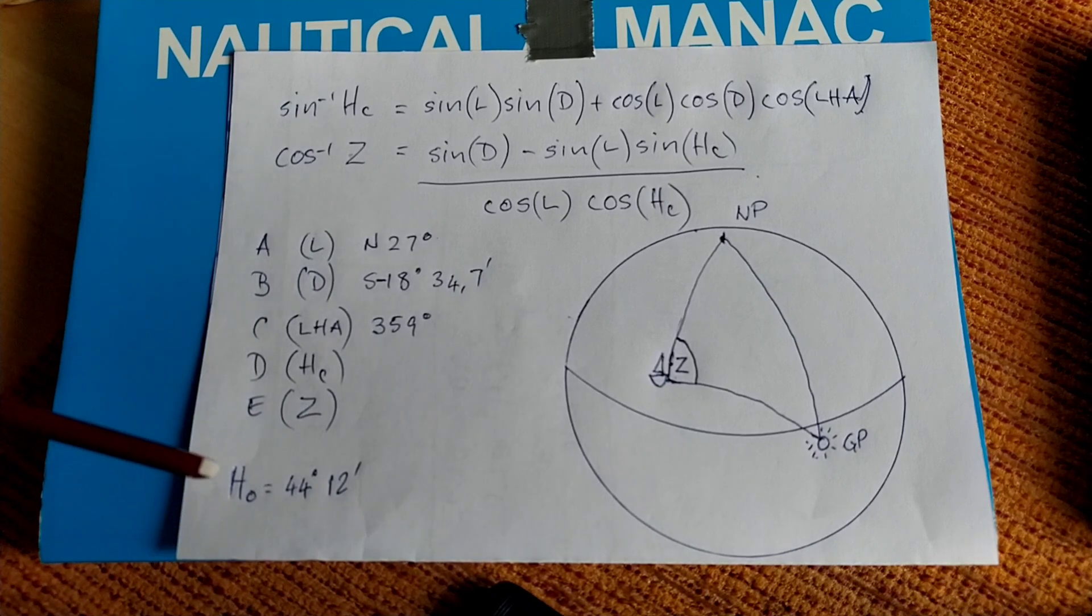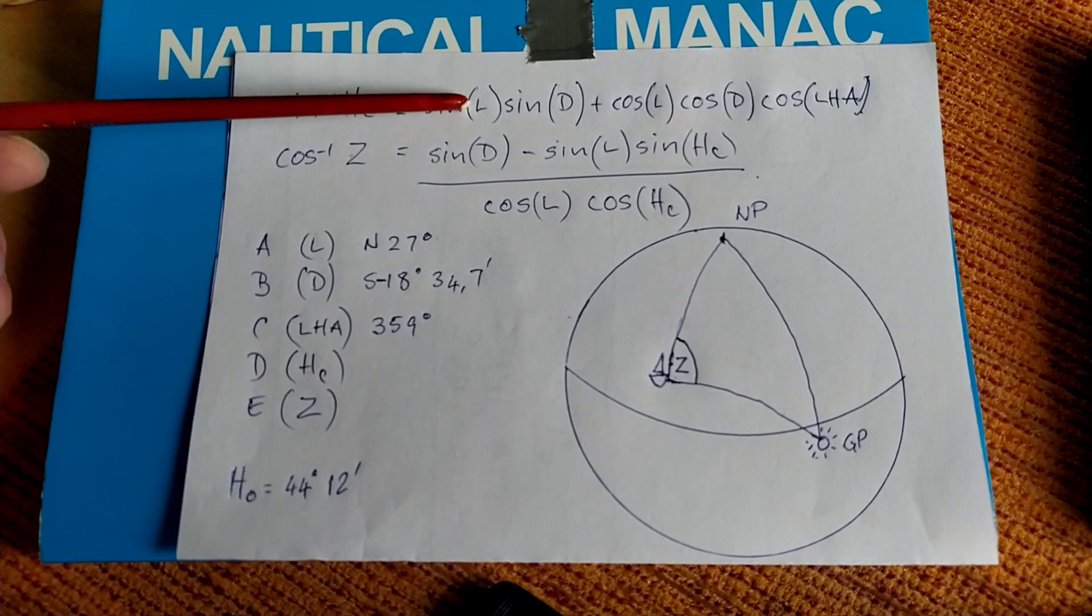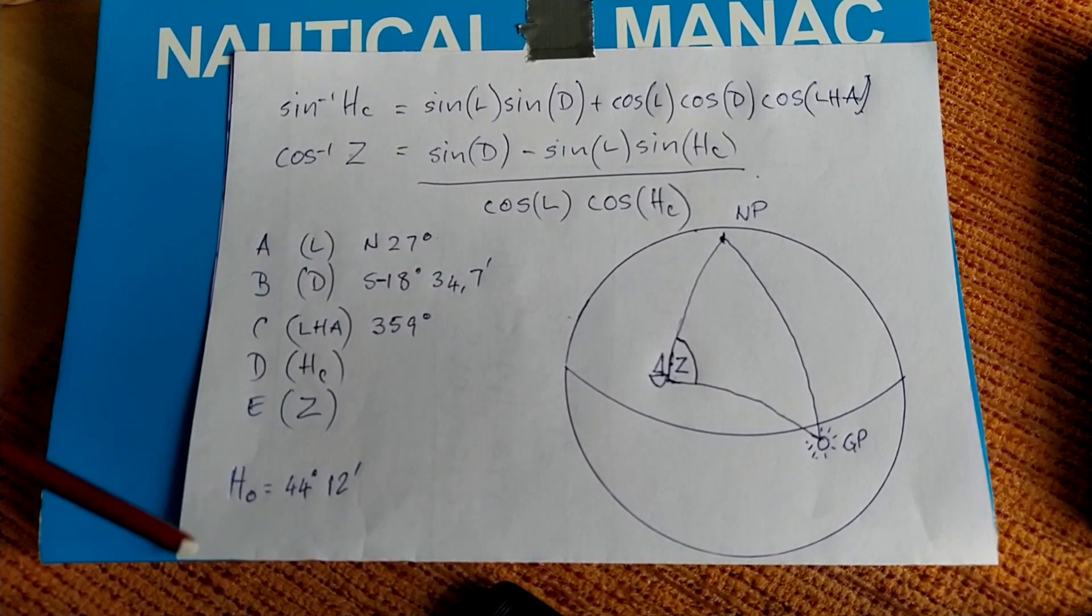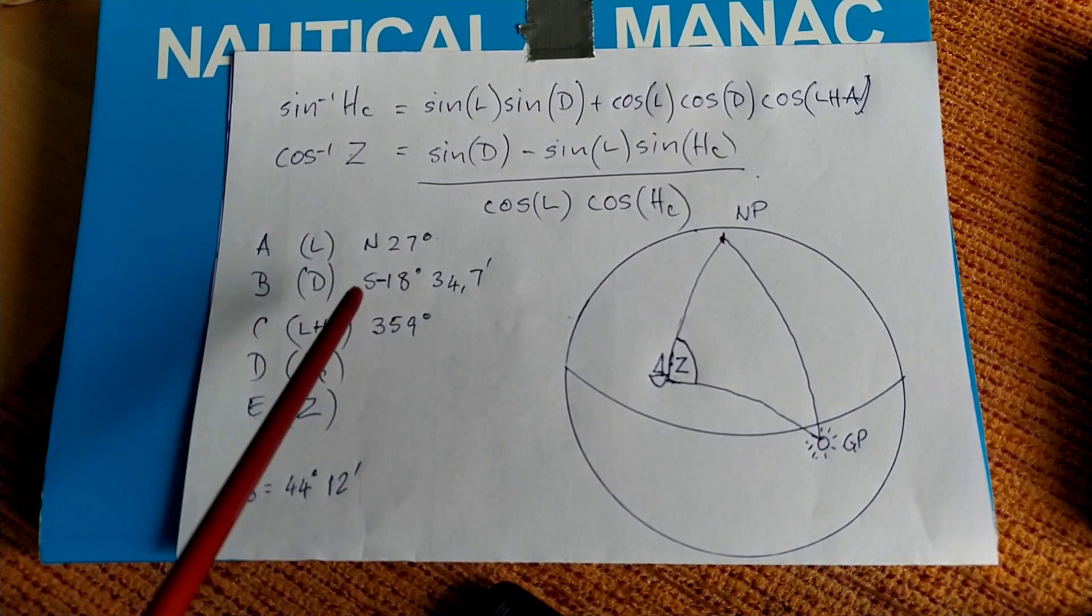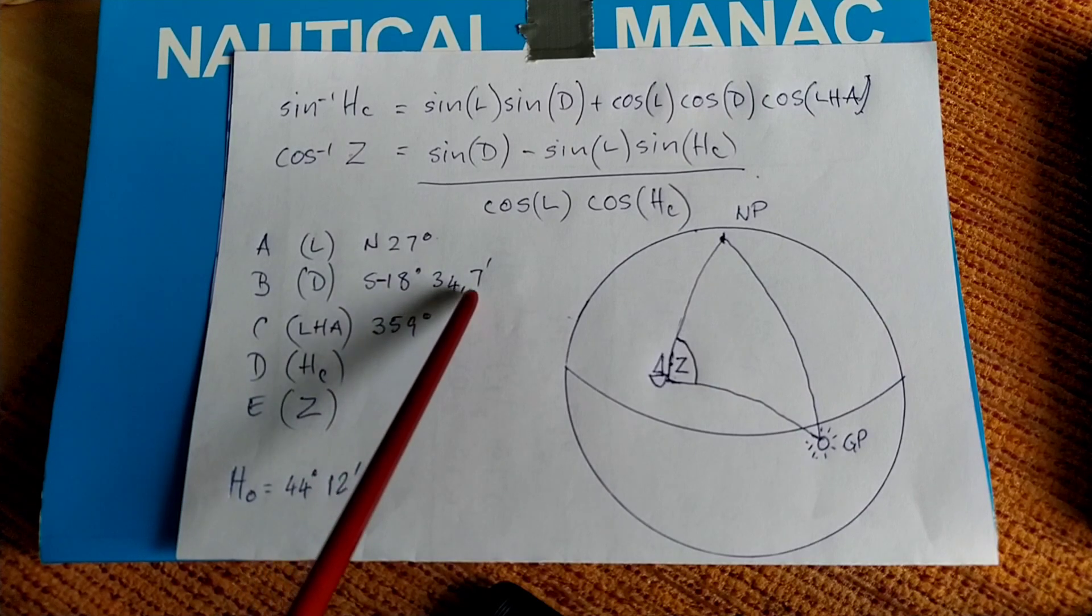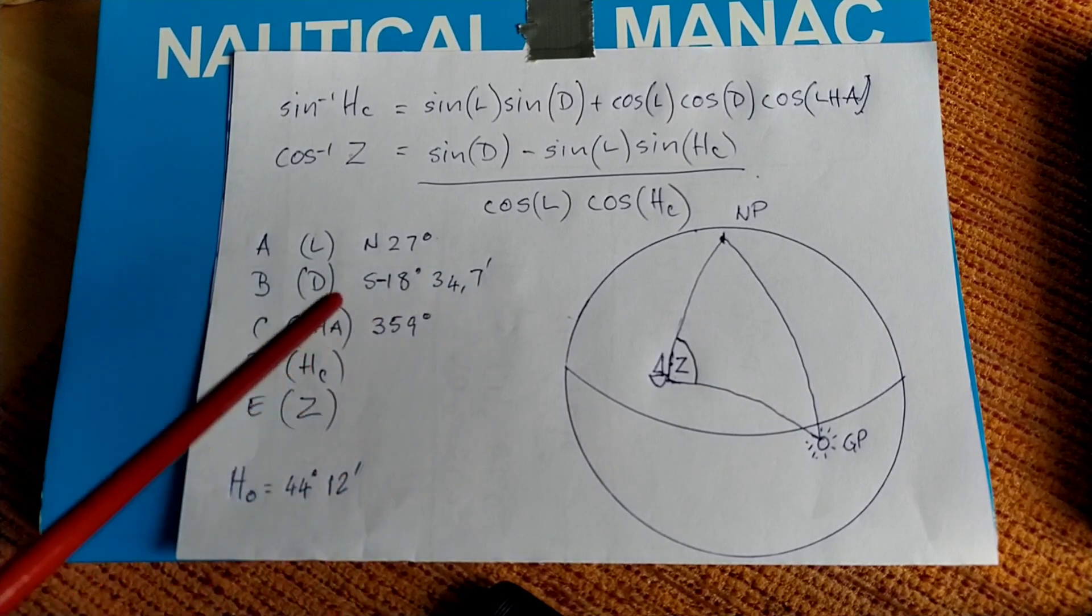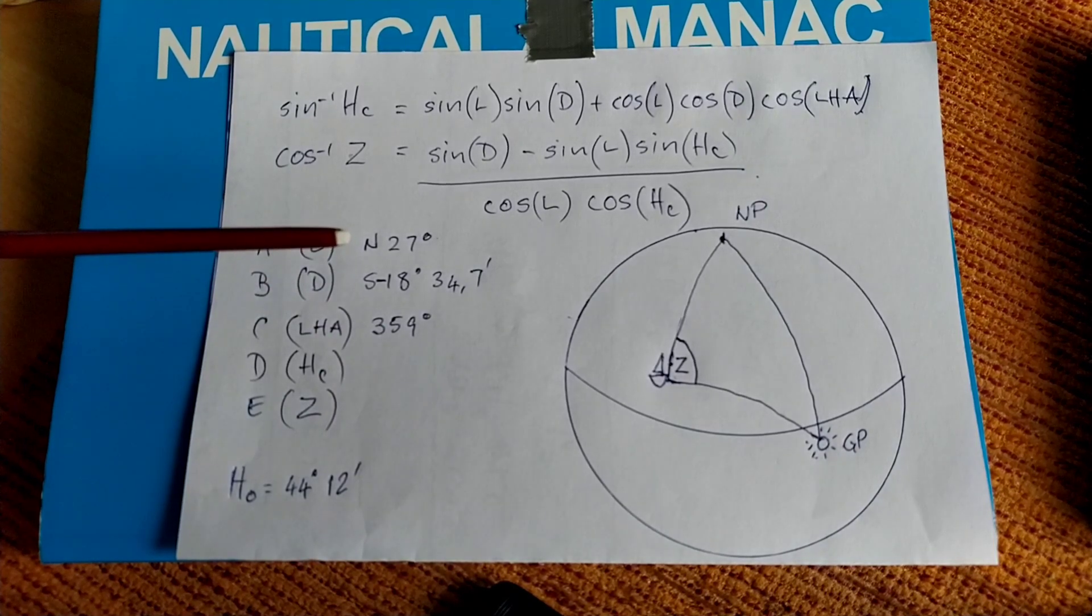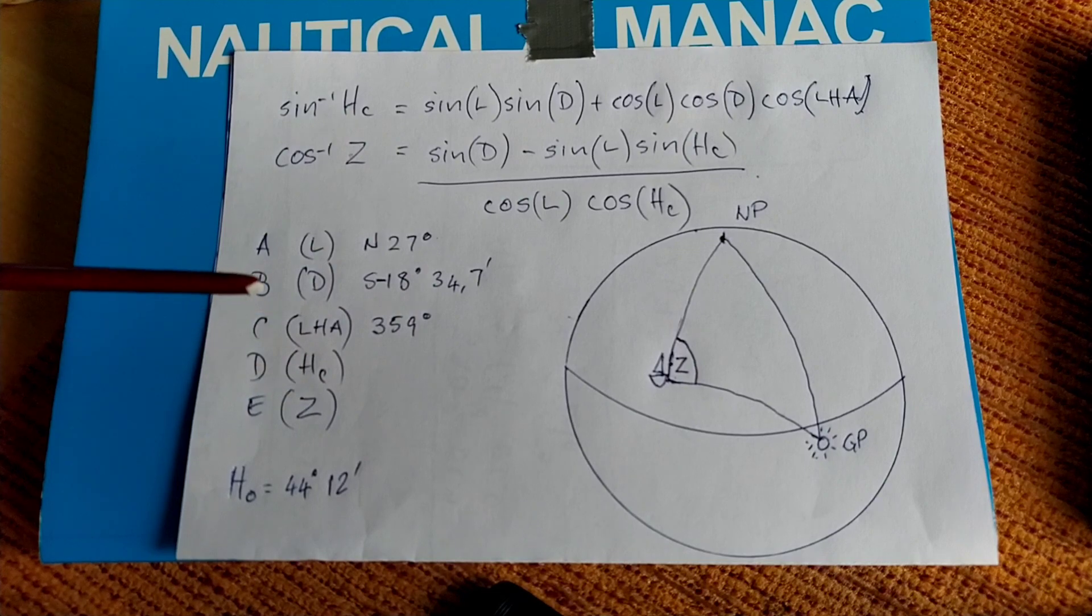The advantage of using a calculator and just calculating directly as opposed to using H0229 or H0249 is that you can actually enter the numbers with minutes, decimal minutes. You can't do that when you're using H0229, you have to put in whole integers.